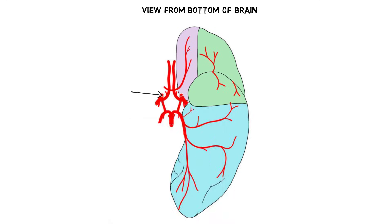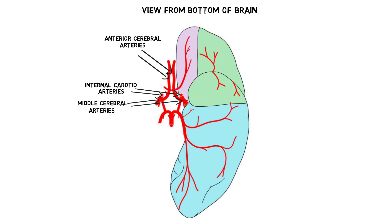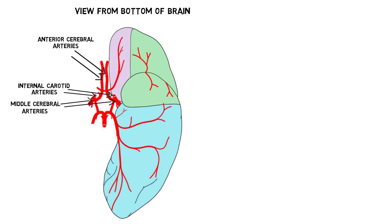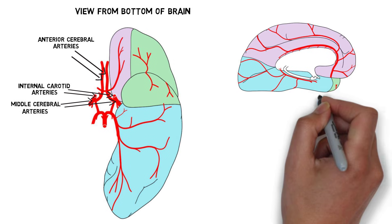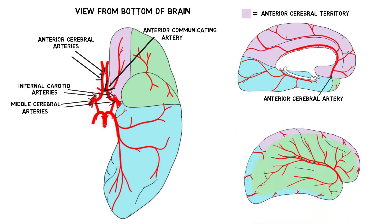After ascending to the brain, the internal carotid arteries split into the anterior and middle cerebral arteries. The anterior cerebral arteries supply the medial frontal and parietal lobes, and they are connected by the anterior communicating artery. The middle cerebral arteries supply most of the lateral surface of the cerebral hemispheres.